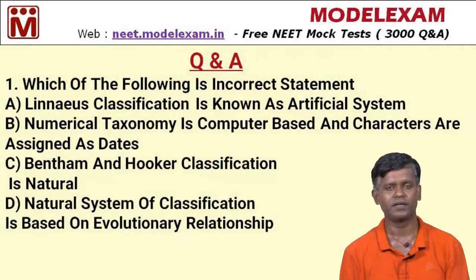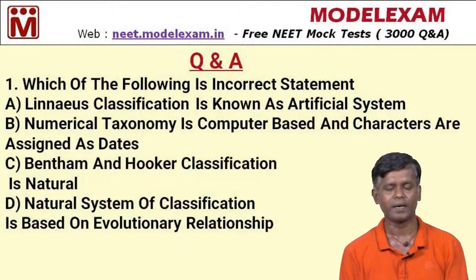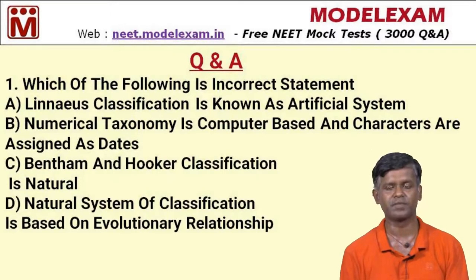Option A — linear system is known as artificial system — is true. Option B — numerical taxonomy is computer-based and works by assigning numbers to similar and dissimilar characters for clear classification — is true. Option C — Bentham and Hooker's classification is natural — is true. Option D is wrong because the natural system of classification does not include evolutionary relationships. So option D is the correct answer.